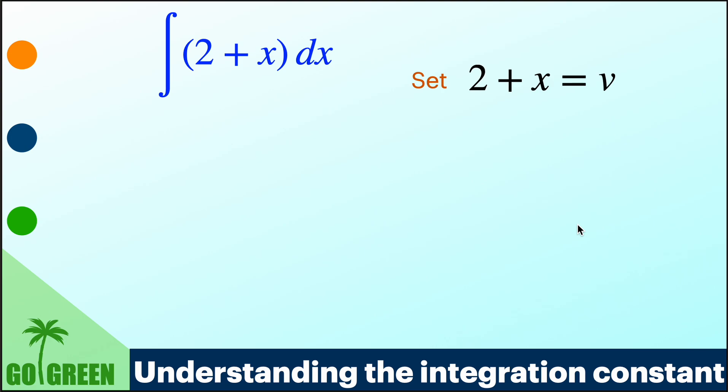Secondly, we can use the method of substitution. 2 plus x can be substituted by v, then dx becomes dv. And the integration transforms into integration v dv instead of 2 plus x. This gives the integration to be v squared by 2 plus C.